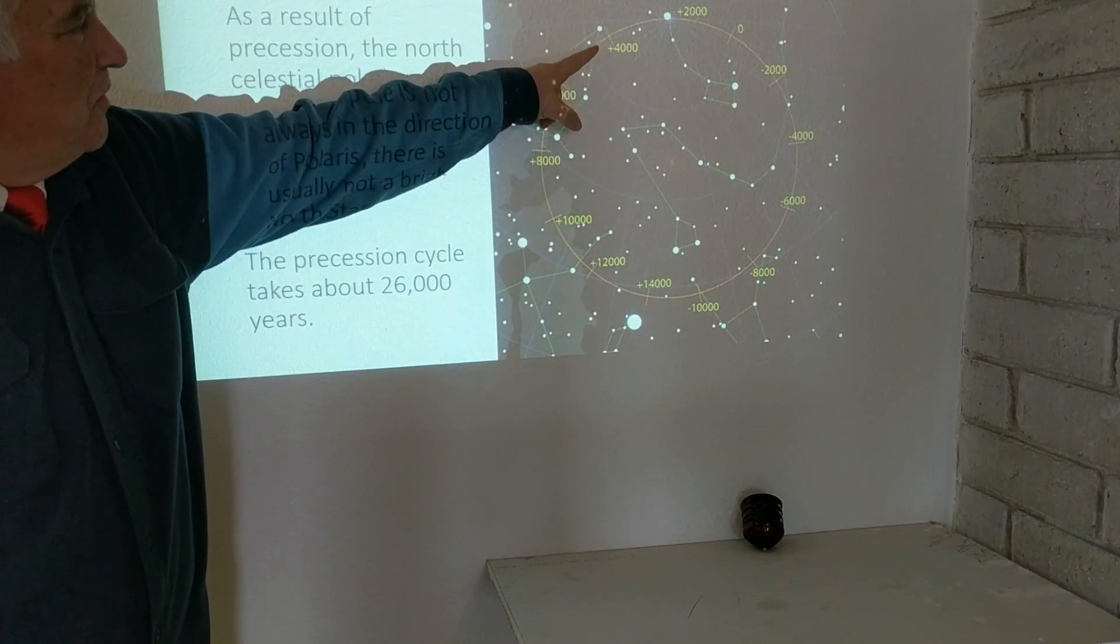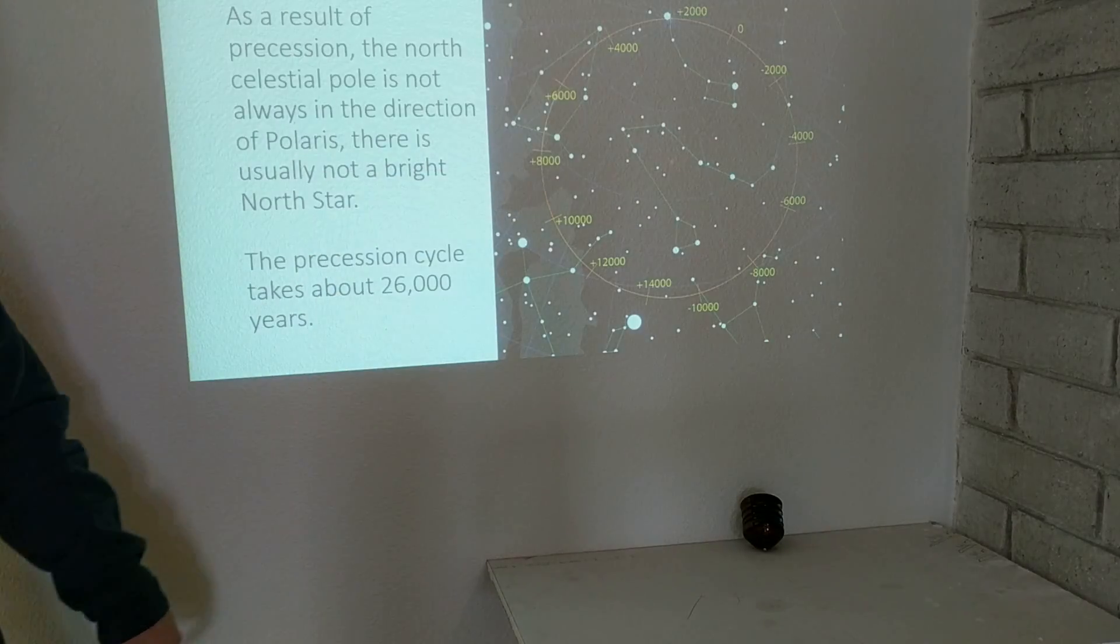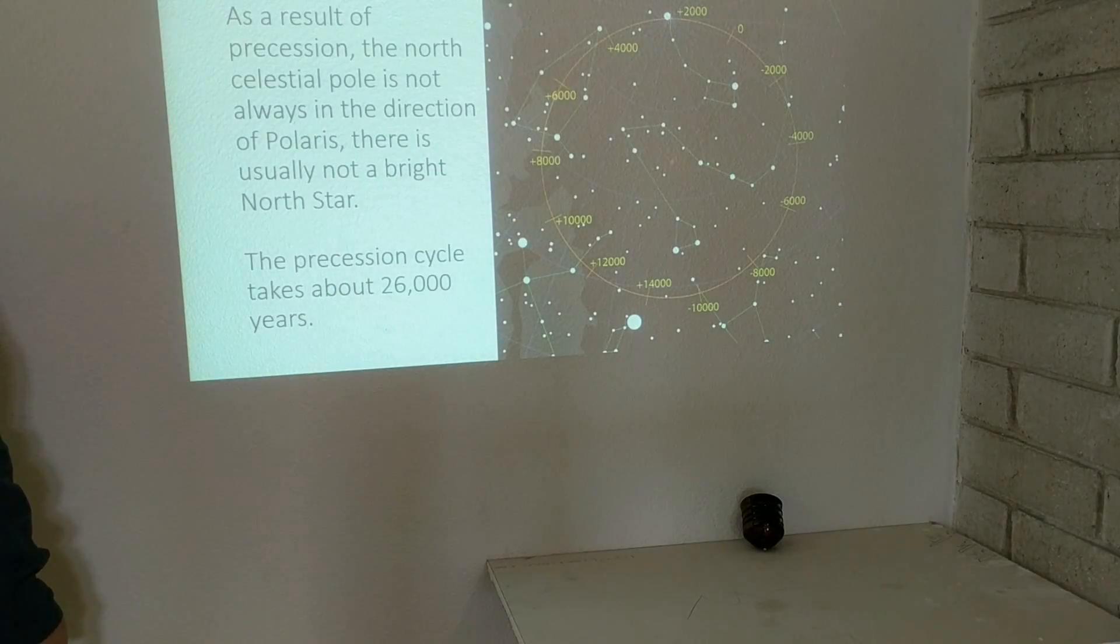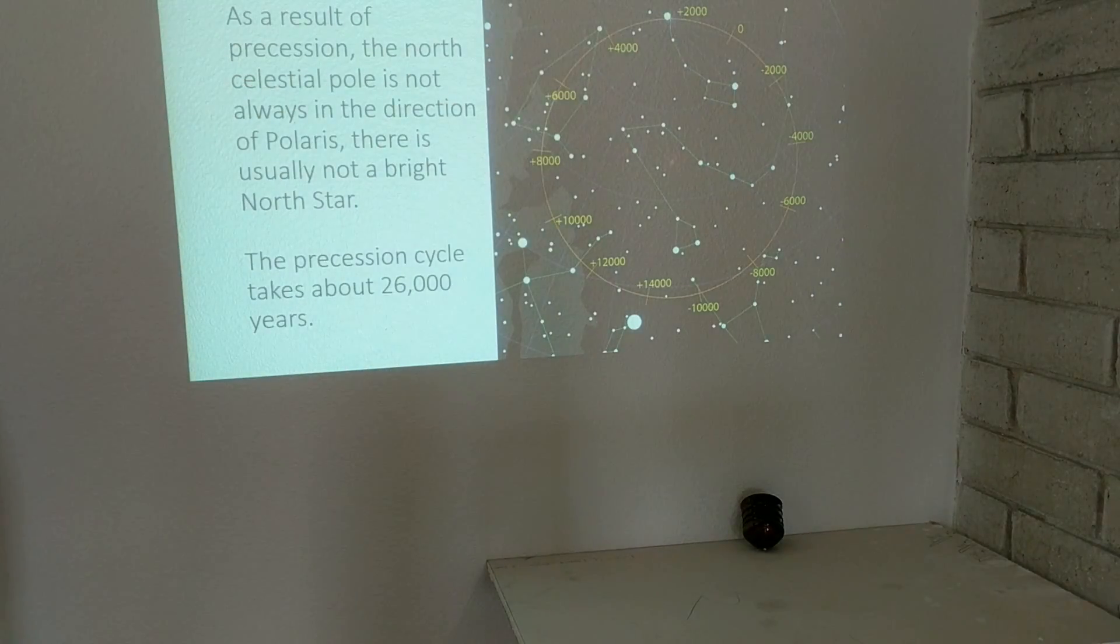As we move 2,000 years into the future or 6,000 years, we can see that there's usually not a bright north star. Right now we have a bright north star which we call Polaris.